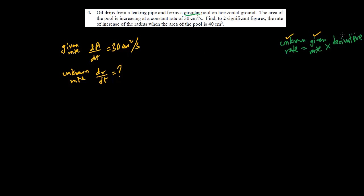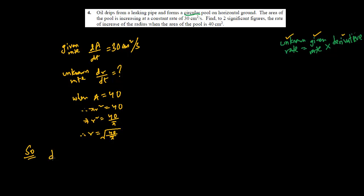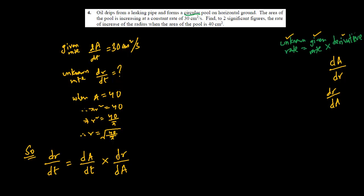The additional information needed for the derivative is that the area of the pool is 40 cm². So πr² = 40, giving r² = 40/π, and r = √(40/π). Since we have to find dr/dt, we write dr/dt = (dA/dt) × (dr/dA), where dr/dA is the reciprocal of dA/dr, so that dA cancels.